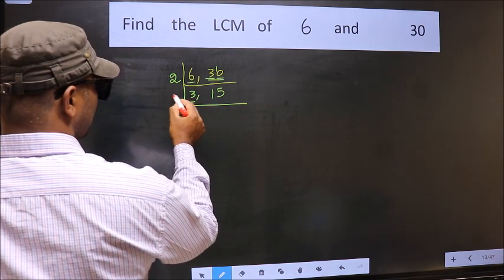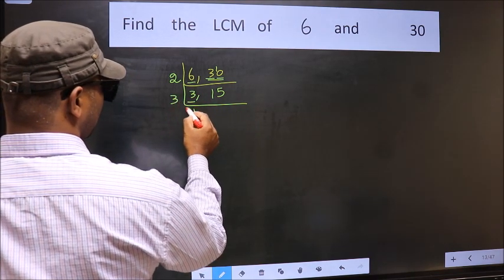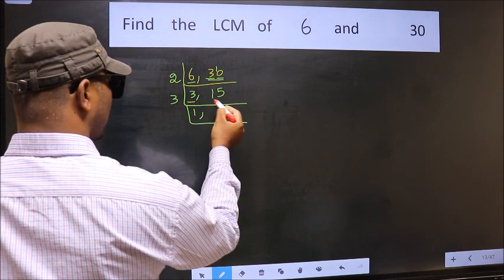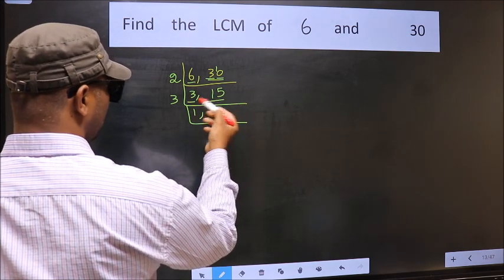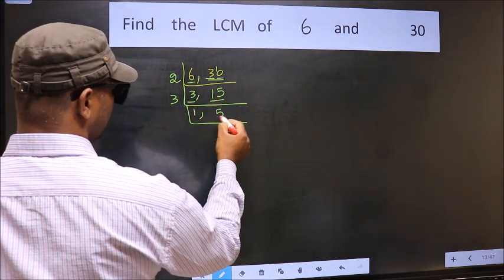Now here we have 3. 3 is a prime number so 3 times 1 is 3. The other number 15, when do we get 15 in 3 table? 3 times 5 is 15.